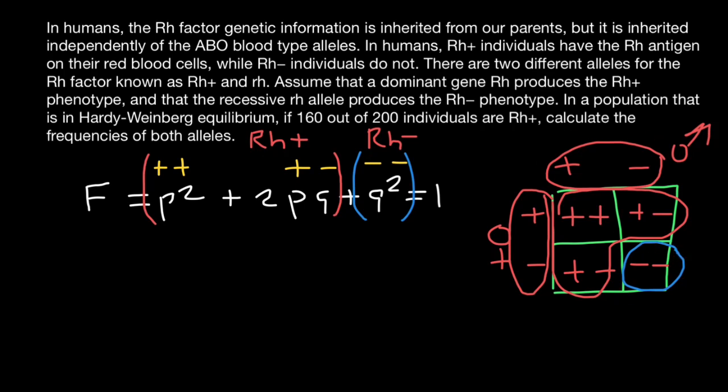According to our problem, we know that the total number of people is 200, and 160 of them belong to this phenotype. That means that 40 out of 200 belong to the Rh negative blood group. And these numbers represent the number of people in a sample group.